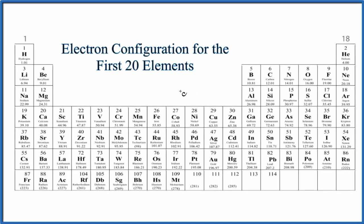One of the things that you're expected to know how to do in general chemistry is write the electron configuration for the first 20 elements. And if you know the pattern, it's really easy. So we're going to learn the pattern for writing the electron configuration for the first 20 elements on the periodic table.